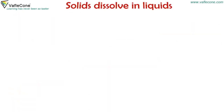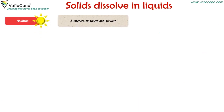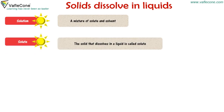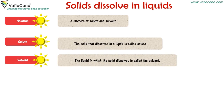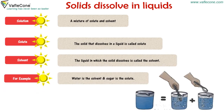Solids dissolve in liquids. Solution is a mixture of solute and solvent. Solute — the solid that dissolves in a liquid is called solute. Solvent — the liquid in which the solid dissolves is called the solvent. For example, water is the solvent and sugar is the solute.